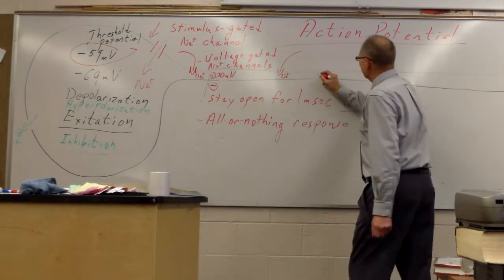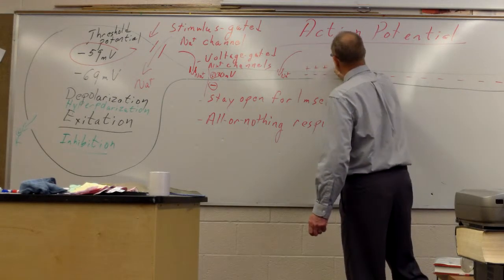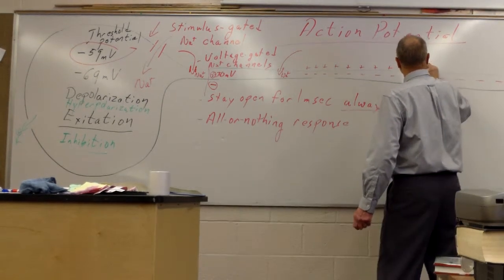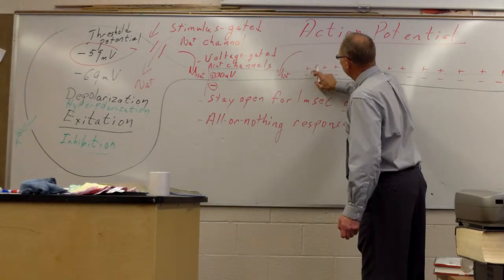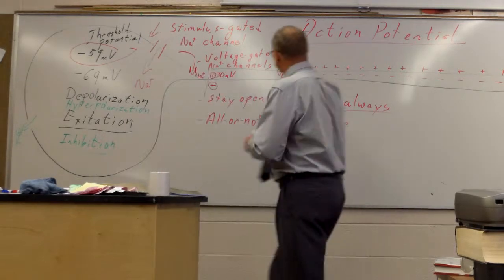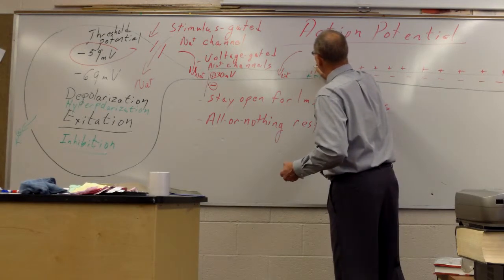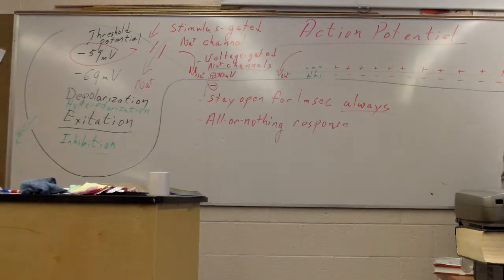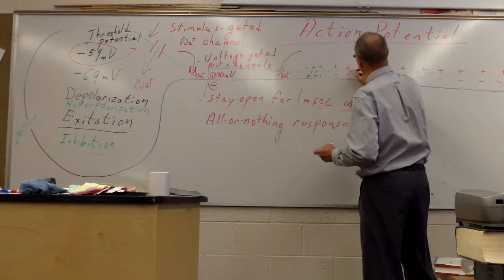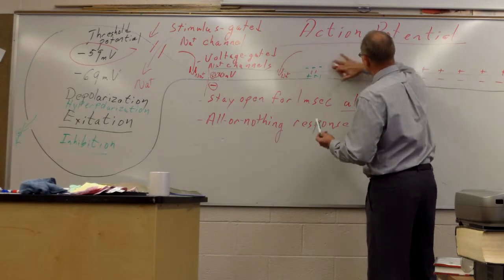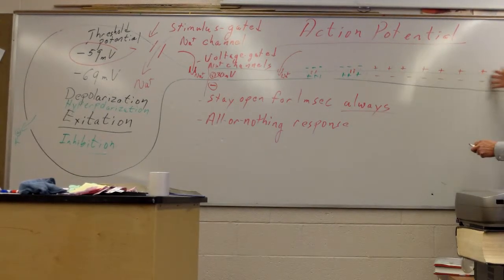So here we have, let's draw out this one. We've got the inside of the cell is normally negatively charged and the outside is positively charged. But when the sodium gates open, that is going to, in that region, flip the polarity. And that flip in polarity is going to cause the next gate to open, which is going to flip that polarity. And as Ali said, a domino effect occurs and this goes on down the line.